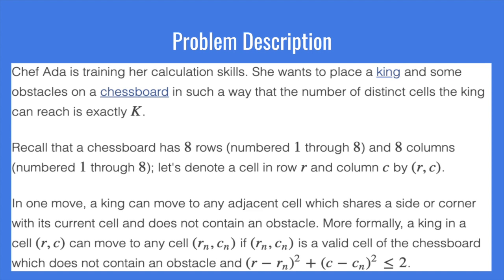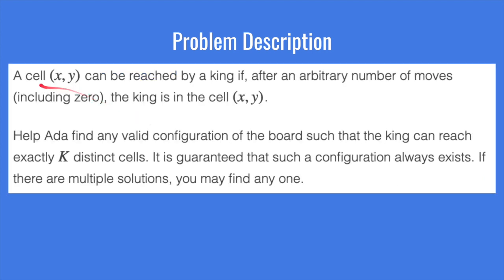Basically, a King can move north, south, east, west, or on any of the diagonals, moving to an adjacent cell that is open and does not contain an obstacle. A cell XY can be reached by the King if, after an arbitrary number of moves, the King is in cell XY. We want to help Chef find any valid configuration of the board such that the King can reach exactly K cells and no more.